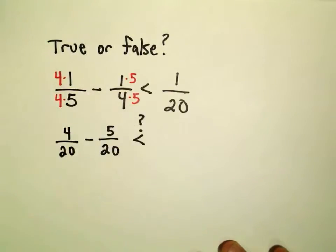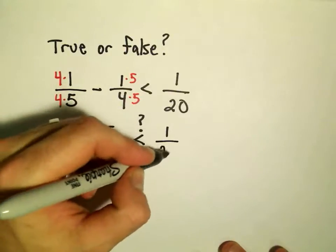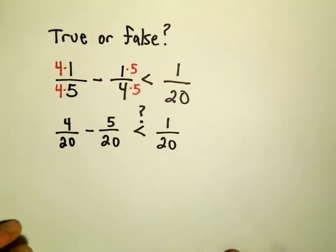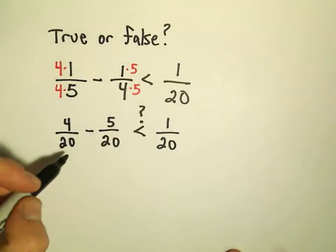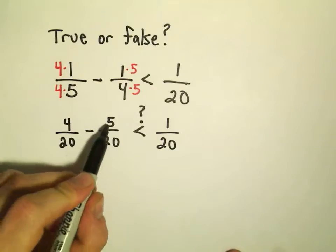And again, I'm asking myself, is this less than 1 over 20? And sometimes what I like to do is just put a little question mark there. So when we have common denominators, we do the arithmetic on the top. So we take 4 minus 5.